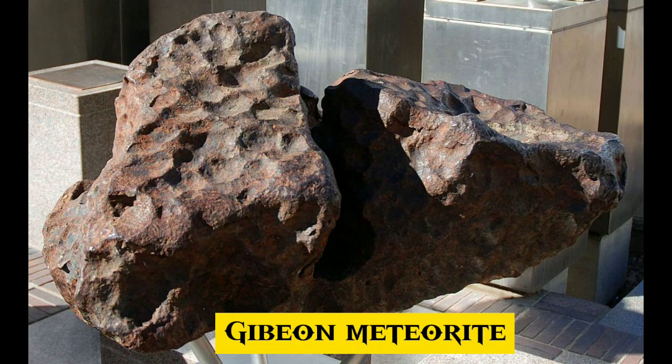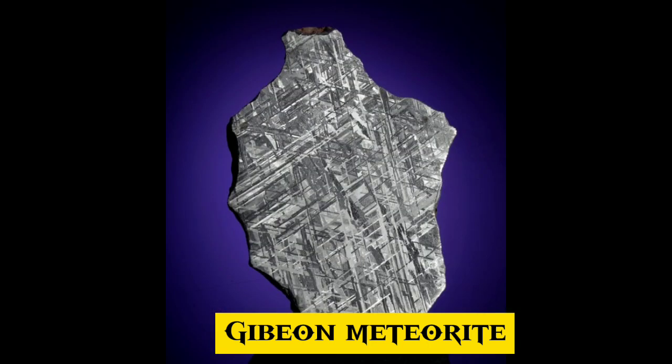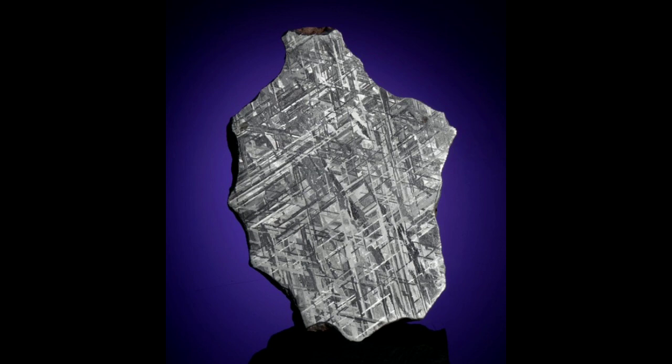7. Gibeon is a meteorite that fell in prehistoric times in Namibia. It was named after the nearest town, Gibeon. Fall date: prehistoric times. Found date: 1838. Region: Great Namaqualand. Structural classification: fine octahedrite. Like most iron meteorites, Gibeon meteorites formed 4.5 billion years ago within the molten core of an asteroid.